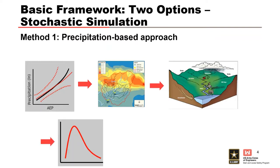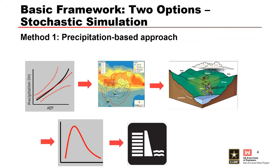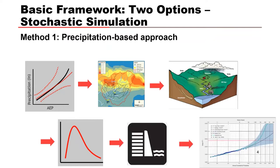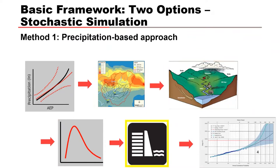We route that inflow hydrograph through a reservoir routing model to obtain a peak stage. Because all of these inputs are uncertain, we use multiple storm patterns, multiple inflow hydrograph shapes, and variations in hydrologic basin parameters such as loss rates, as well as variations in reservoir operations. This whole procedure is repeated many, many times to create a series of peak stages that define the reservoir stage frequency curve. Unfortunately, this method is very computationally intensive.